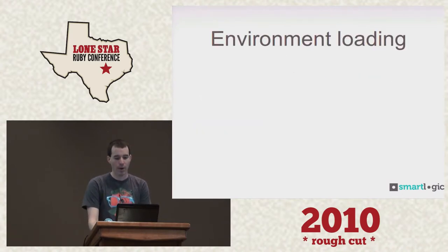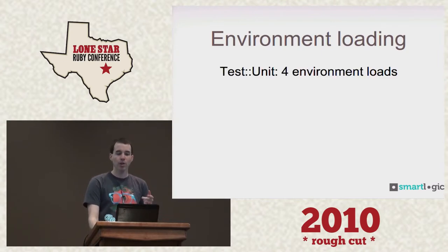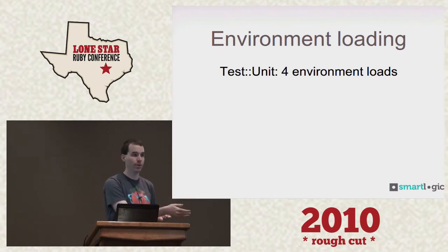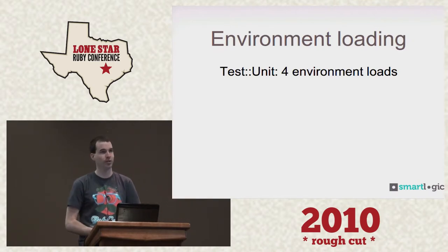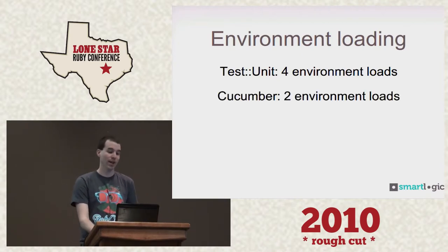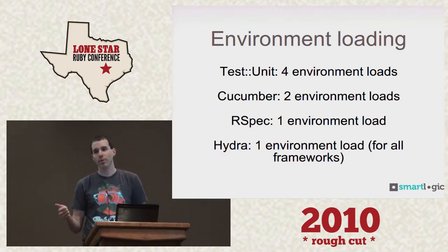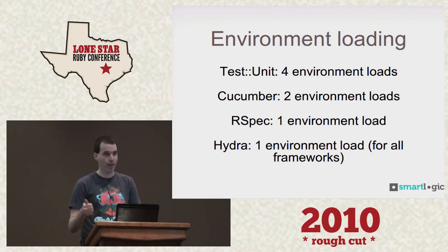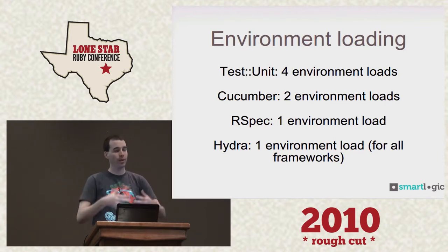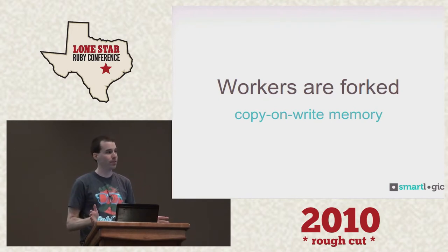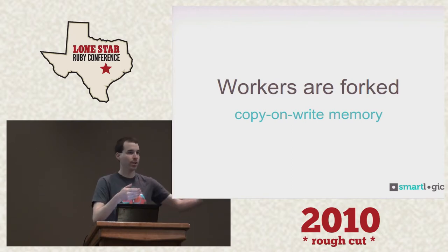One thing I want to talk about is environment loading. If you've ever looked at Test Unit or Cucumber, they actually double-boot your environment. With Test Unit, you can end up with four environment loads: one that boots your Rails project, then it shells out to unit tests which boot the environment again, then shells out to functional, then to integration. Cucumber is a bit better, but it still boots your environment and then shells out again. RSpec has one environment load. Hydra has one environment load for all of your frameworks — it will only boot your environment once and then run unit tests, Cucumber, and RSpec all within that same environment. It does that by forking workers, so you get great copy-on-write memory savings.